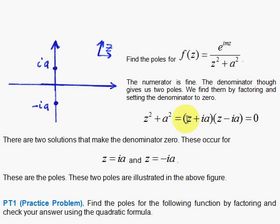And this one factors easily. Basically, you get z plus ia as one factor, and z minus ia as the other, so when z equals ia, you have 0, and if z equals negative ia, you have 0 also. There are the two poles in the complex plane.